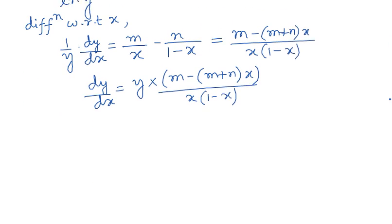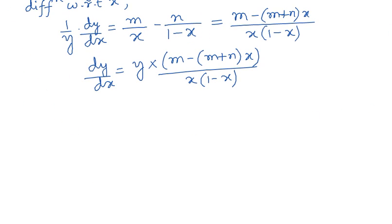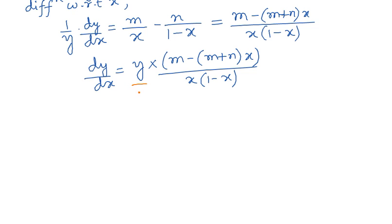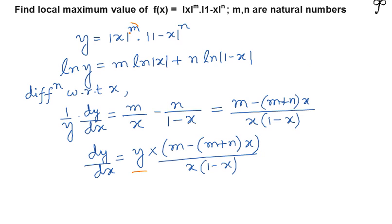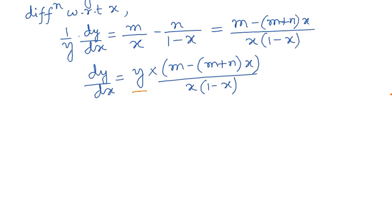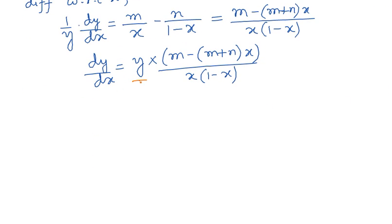For the sign changing of the derivative, the quantity y — the function itself — is a positive quantity, because |x|^m and |1-x|^n are both non-negative, and raising a non-negative value to a natural number power gives a non-negative result. So y is definitely positive.